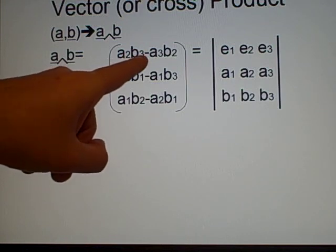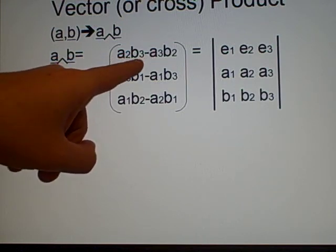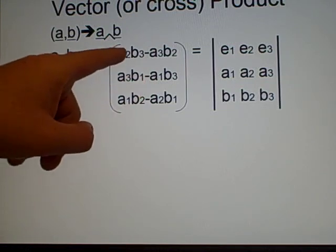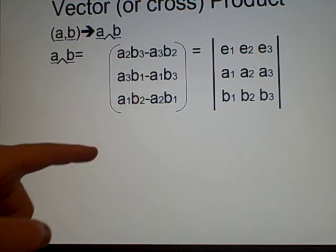And then we carry on the cycle from here. It's cyclic. So after 3 comes 1. So we carry the 3 on. 3, 1, and then 1, 2. Yeah? 2, 3, 3, 1, 1, 2. And you swap it all the time. So we've got 3, 1, 1, 3, 1, 2, 2, 1.